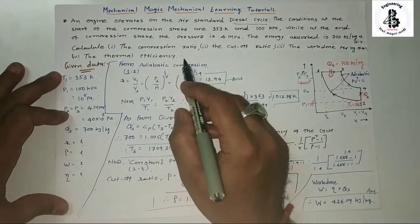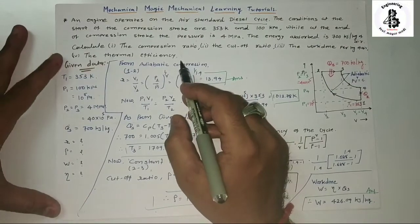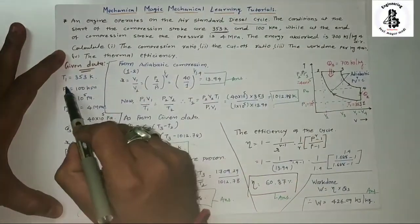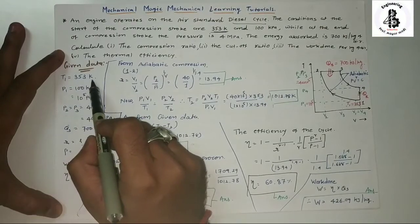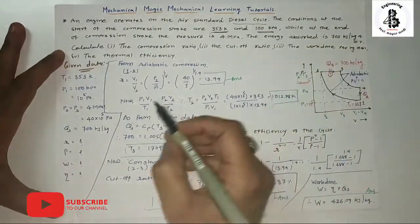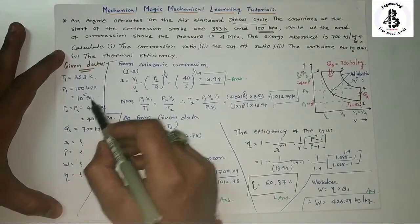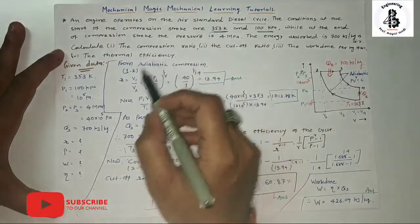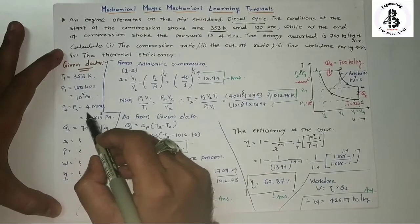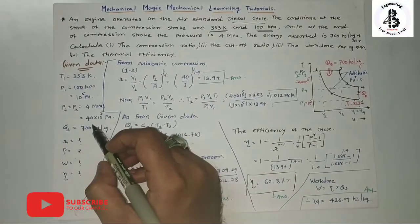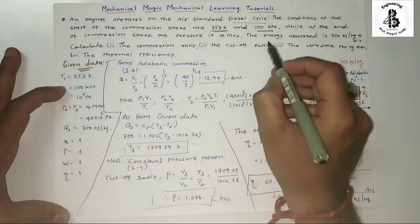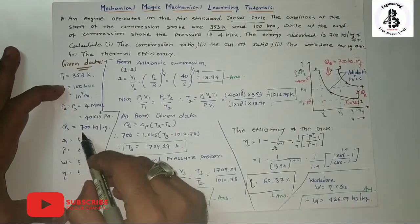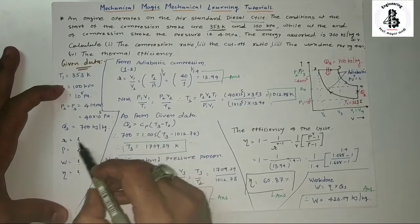Extracting the given data: T1 = 353 K, P1 = 100 kPa = 1 × 10⁵ Pa. At the end of the compression stroke in the Diesel cycle, P2 = P3 = 4 MPa = 40 × 10⁵ Pa. The energy absorbed, Q_supply = 700 kJ/kg.